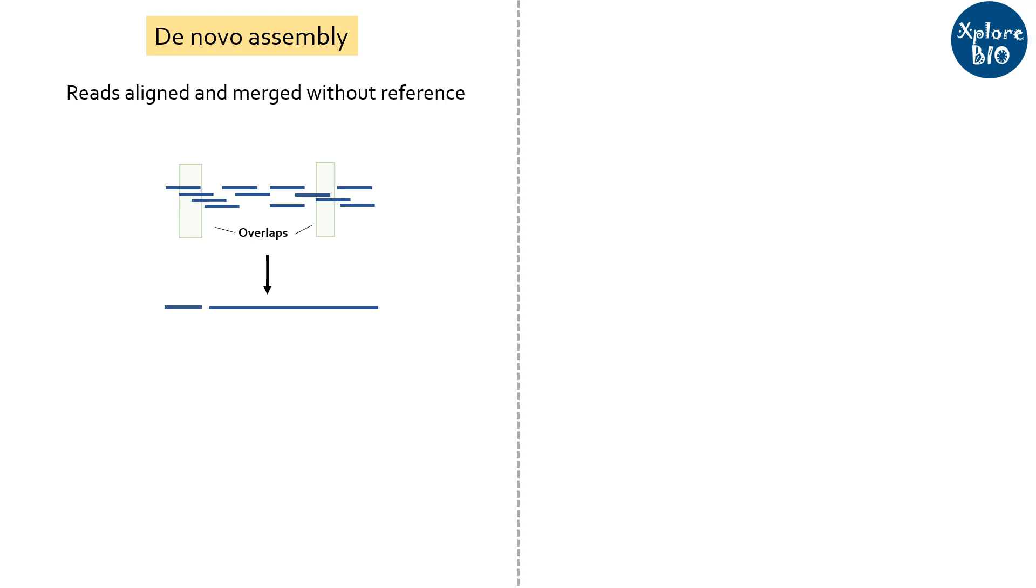As for most organisms, a reference genome itself is not available. On the other hand, reference-based assembly uses an existing reference genome to guide the assembly process.